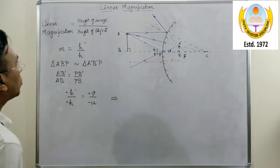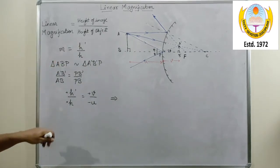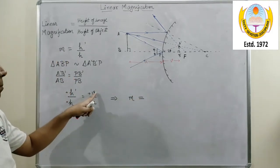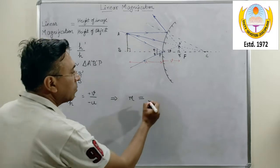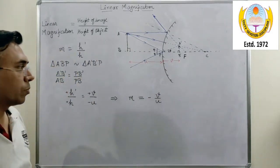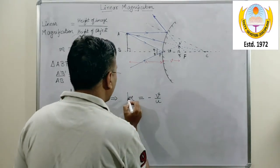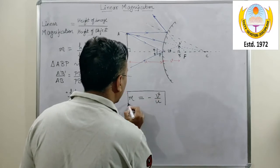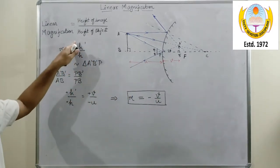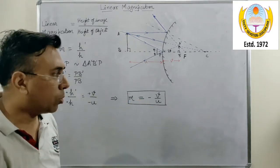Now we know that M is h' upon h, which will be M, and this can be written as plus V upon minus U, which is nothing but minus V upon U. So this expression gives us the first formula of magnification in terms of V and U. Obviously, the other formula which we have is h' upon h, but this is a formula in terms of V and U.